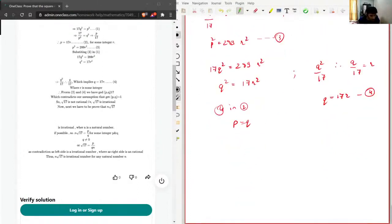Now which contradicts our assumption that GCD of P comma Q equal to 1. So root 17 is not rational, that is, root 17 is irrational. Now we have to prove that n root 17 is irrational where n is a natural number.